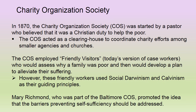In 1870, the Charity Organization Society, or COS, was started by a pastor who believed it was a Christian duty to help the poor. The COS acted as a clearing house to coordinate charity efforts among smaller agencies and churches. The COS employed 'friendly visitors' — today's version of caseworkers — who would assess why a family was poor and develop a plan to alleviate their suffering. However, these friendly workers used social Darwinism and Calvinism as their guiding principles. Mary Richmond, who was part of the Baltimore COS, promoted the idea that the barriers preventing self-sufficiency should be addressed, not merely the actual reasons why a family was poor.